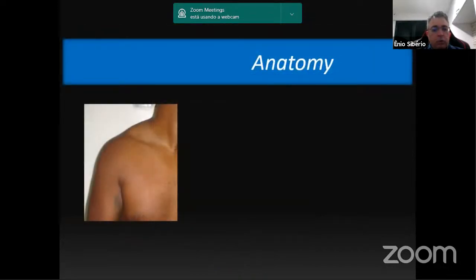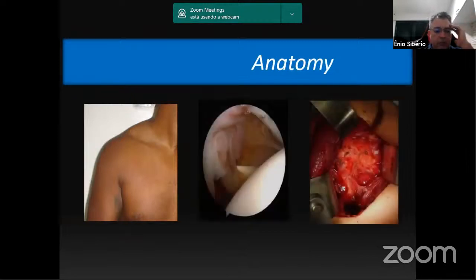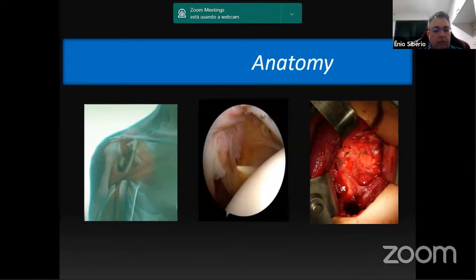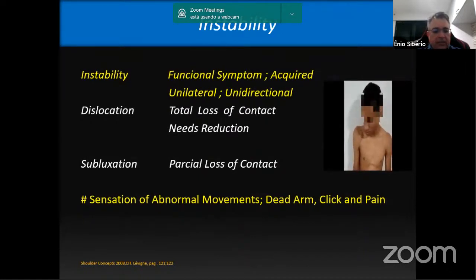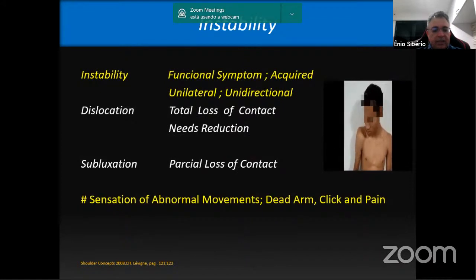It is very important to know the shoulder surface anatomy to identify the exact location of important structures. Besides knowing the arthroscopic anatomy, it is also important to know the principles of open surgery, and to be especially careful with the neurovascular structures. The term instability refers to a functional acquired unilateral symptom. A small percentage of young patients sublux the shoulder voluntarily, usually in the posterior direction, because the posterior capsule is less resistant than the anterior, which is a sign of instability without traumatic onset.